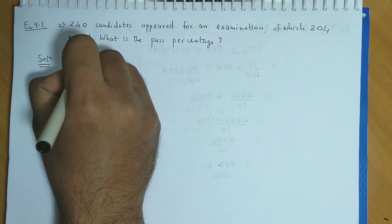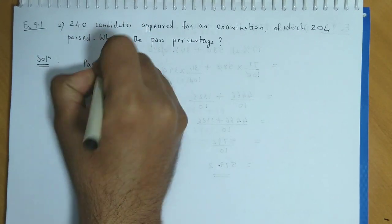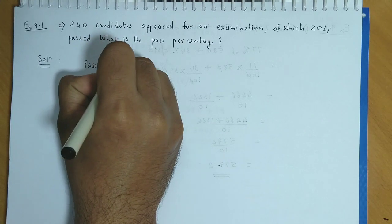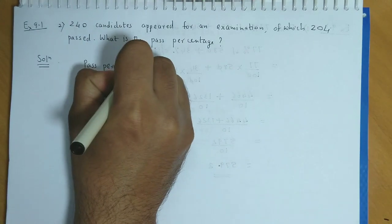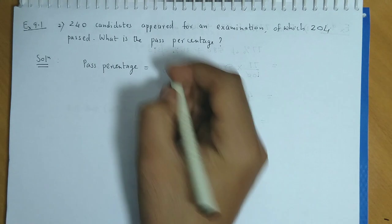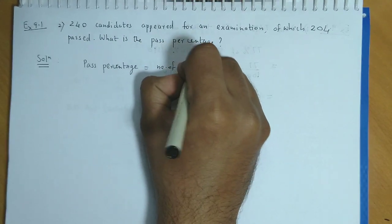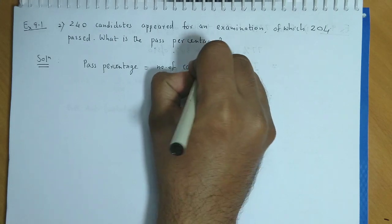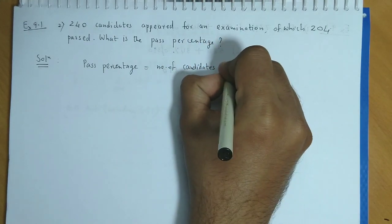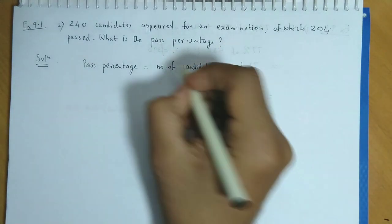So, the pass percentage is equal to number of candidates passed upon the total number of candidates.